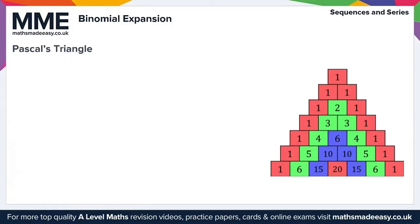Pascal's triangle is created by putting 1's down the sides. Every number comes from adding the two above. For example, this 3 comes from 1 plus 2. Again, 2 plus 1 gives us this 3. This 6 comes from 3 plus 3. This 10 comes from 6 plus 4. The 20 comes from 10 plus 10. That's just an example of how it works.